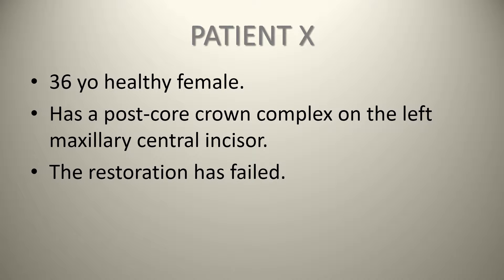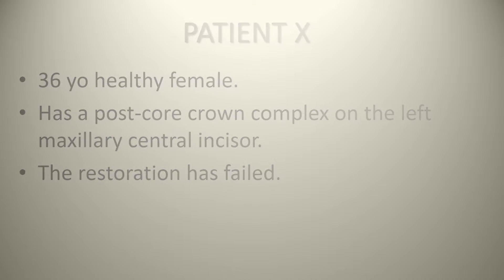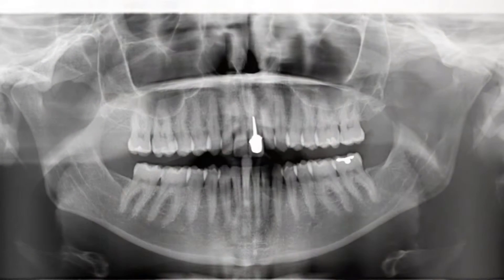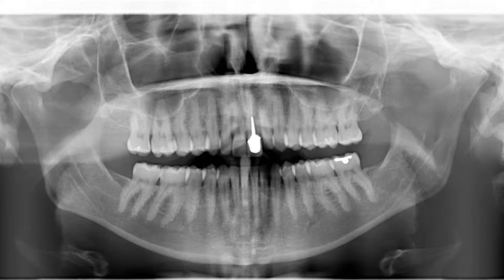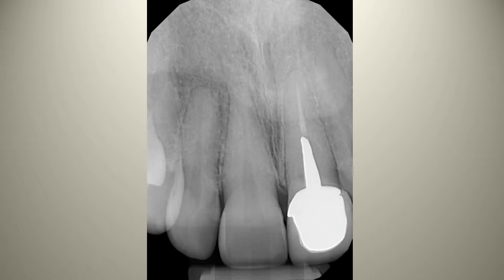Upon reviewing the panoral radiograph, you can see that the upper left maxillary central incisor, tooth number 2-1 as per FDI definition, has a root canal treatment, an effectively long enough post, and an indirect restoration in the form of a crown. When looking at the periapical radiograph, one can see that there is no bone loss associated with this tooth or any other issue that one can see.